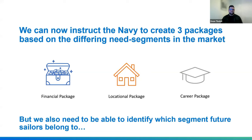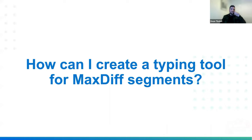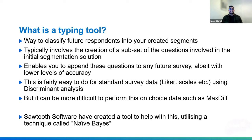We also need to be able to identify the segment that future sailors belong to. We can't do the full-length MaxDiff for everyone ongoing — it's not efficient. So we need to create a typing tool. Creating a typing tool is typically the main barrier to using MaxDiff as a segmentation source. Manually identifying key questions to ask can be time-consuming, and traditional techniques often perform poorly. A typing tool is a way to classify future respondents into your created segments — typically a subset of questions from the initial segmentation solution — allowing you to append segments to respondents in any future survey, albeit with a lower level of accuracy. This is fairly easy for Likert scale data using discriminant analysis, but more difficult to perform on choice data like MaxDiff.